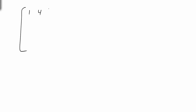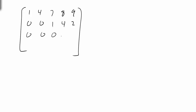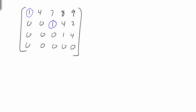Let me give an example. Consider the matrix: row 1 is 1, 4, 7, 8, 9; row 2 is 0, 0, 1, 4, 2; row 3 is 0, 0, 0, 1, 4; row 4 is all zeros. The row of all zeros is at the bottom. The leading 1 in row 1, then row 2's leading 1 is to the right of row 1's, and row 3's leading 1 is further right still. So this is in row echelon form.